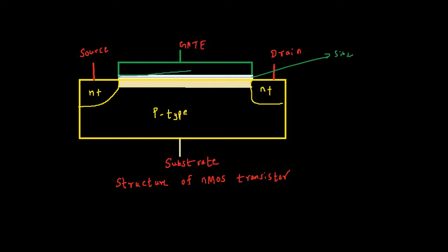Silicon dioxide acts as an insulator. Just below the SiO2, on the surface of the P-type substrate, is the region called the channel, also known as the inversion region. This inversion region under the silicon dioxide, between source and drain, is called the channel and provides the conducting path.